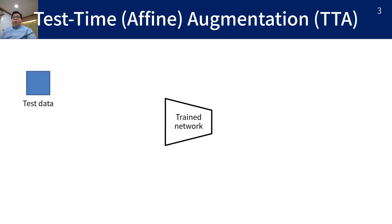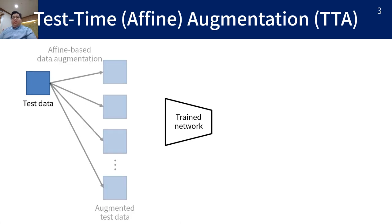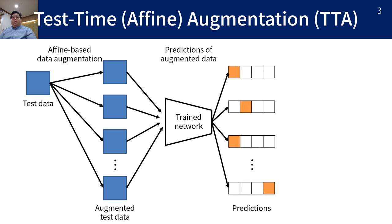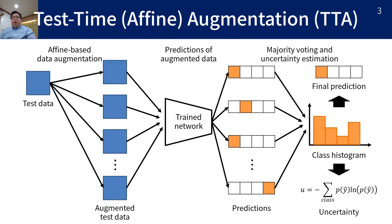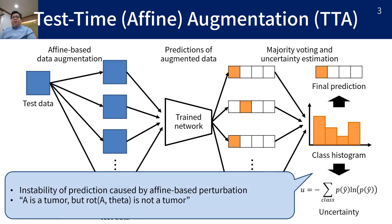One of the well-known methods for uncertainty estimation is test time augmentation. In this method, the test data is first augmented by affine-based data augmentation, and a trained network gives predictions for these augmented data. From the class histogram of these predictions, we obtain the final prediction by majority voting and the uncertainty by entropy. So in test time augmentation, we obtain the uncertainty as the instability of prediction caused by affine-based perturbation.